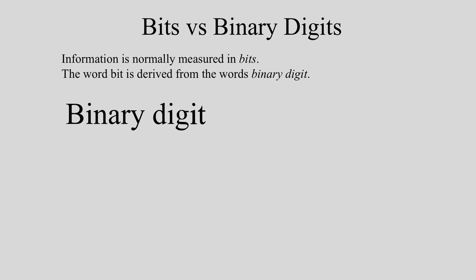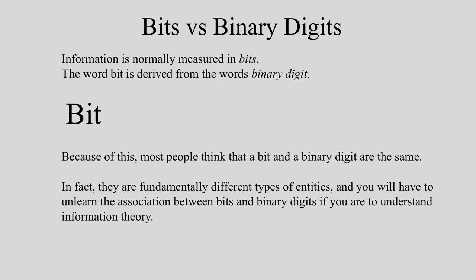Information is normally measured in bits. The word bit is derived from the words binary and digit. Because of this, most people think that a bit and a binary digit are the same. In fact, they are fundamentally different types of entities, and you will have to unlearn the association between bits and binary digits if you are to understand information theory.